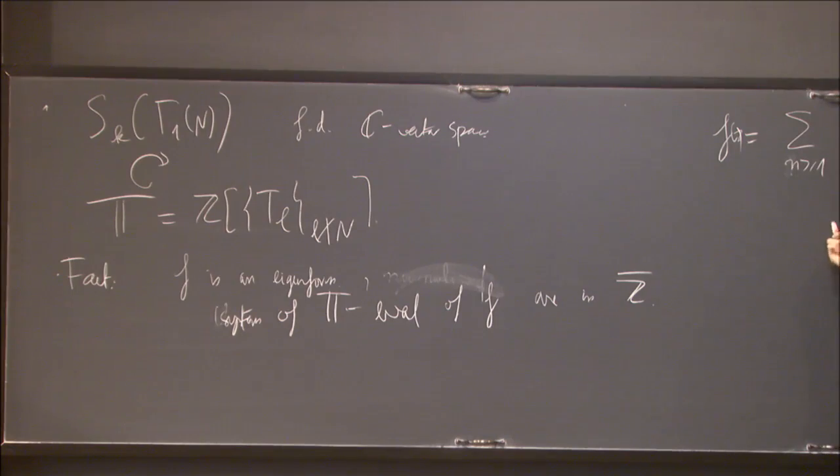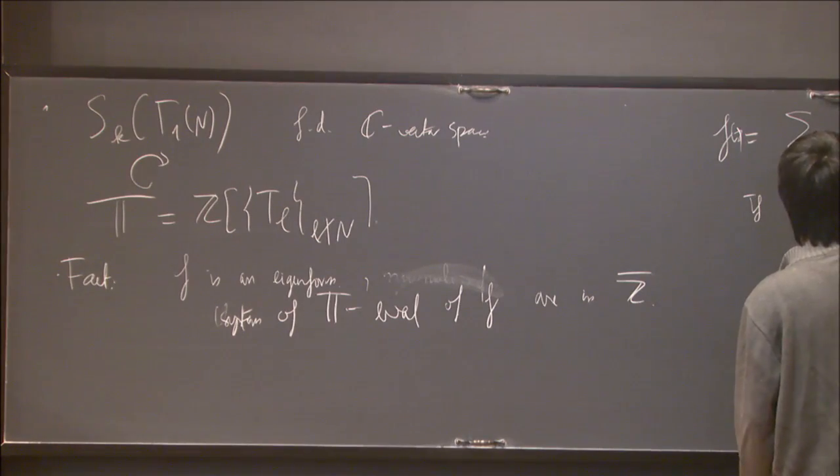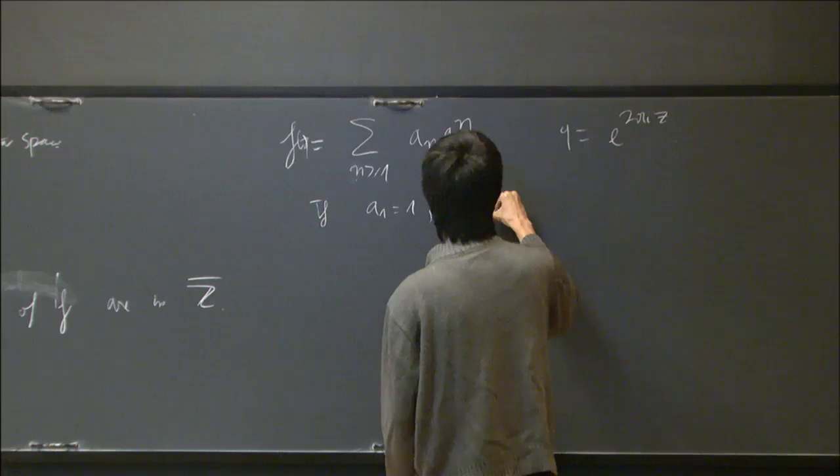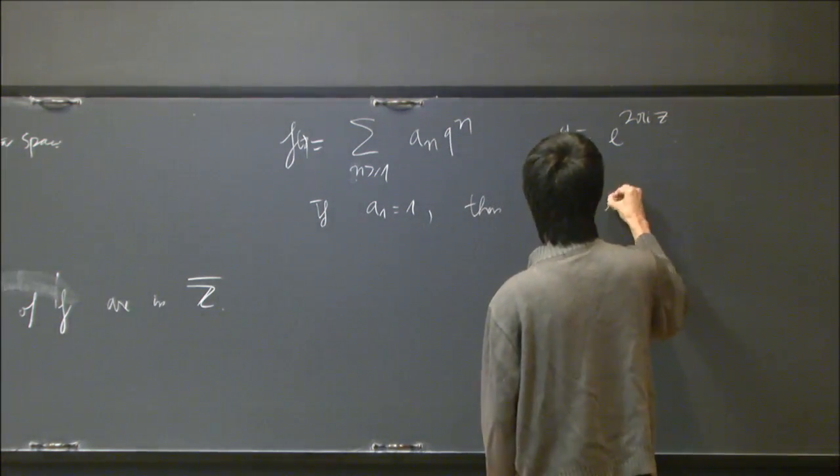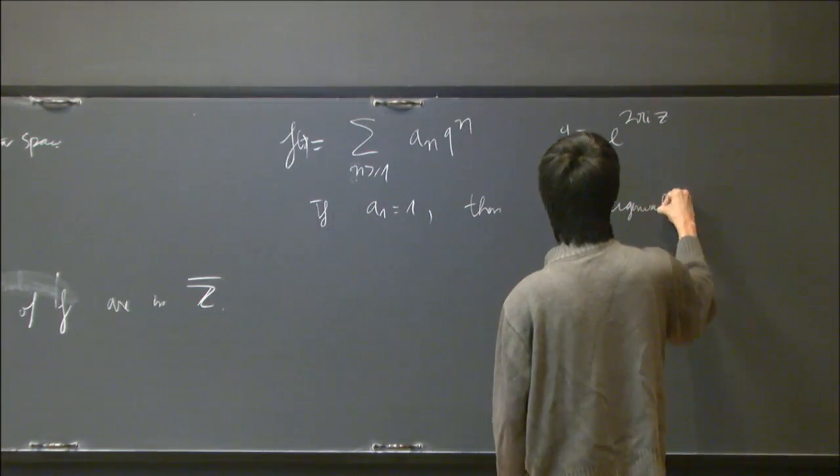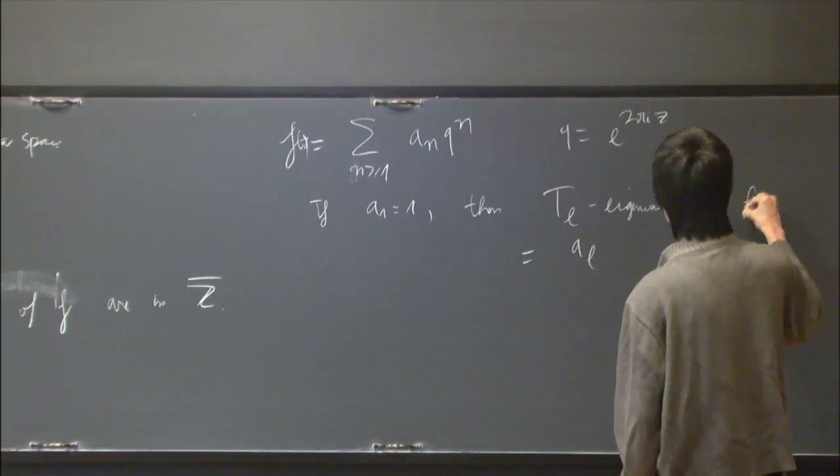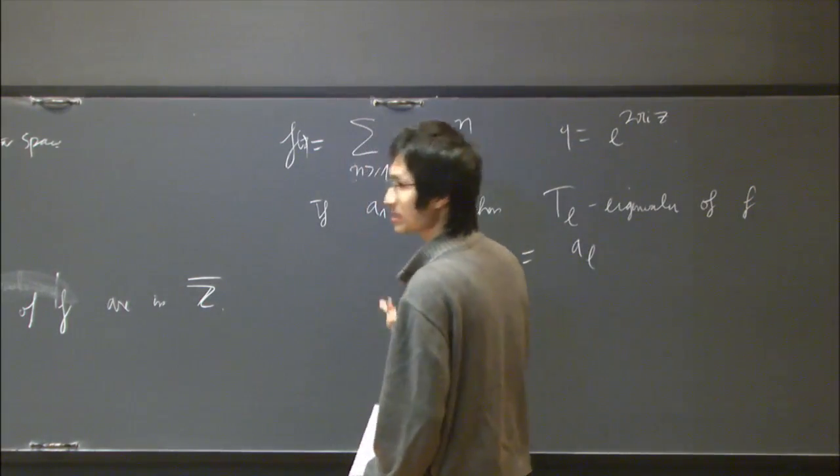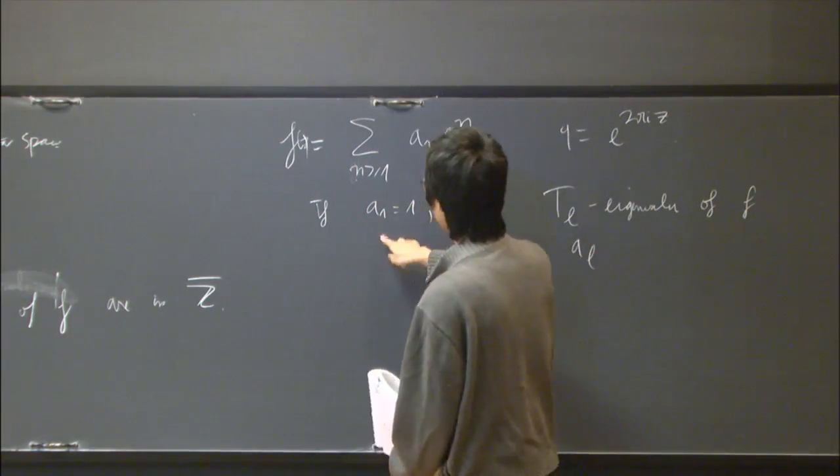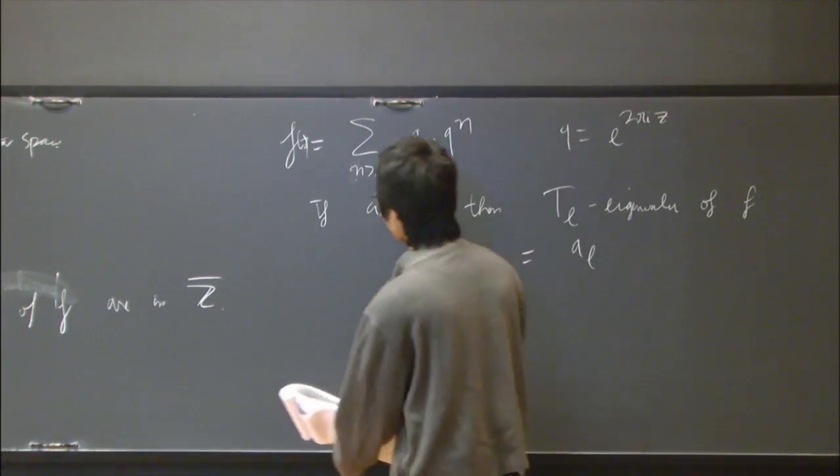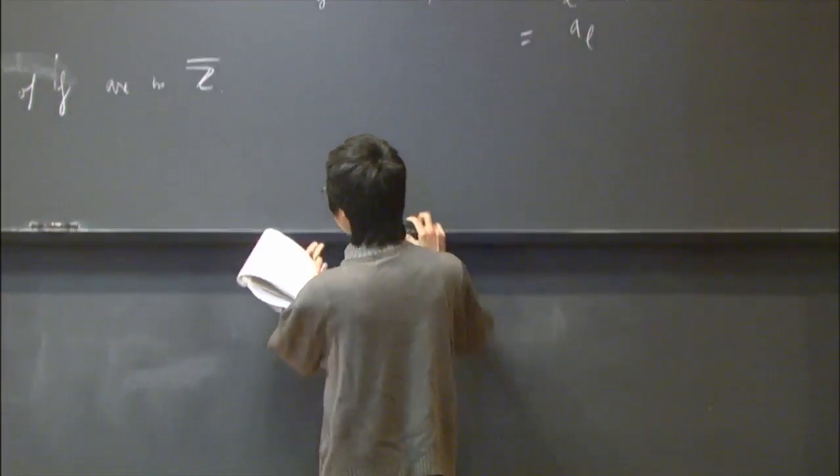So it turns out that you can easily extract the system of Hecke eigenvalues based on this Fourier expansion. Namely, if a_1 is equal to 1, then the T_l eigenvalue is nothing but the l-th Fourier coefficient. And so this fact here just says that the Fourier coefficients of the form, if I normalize it to have a coefficient of q equal 1, are algebraic integers.